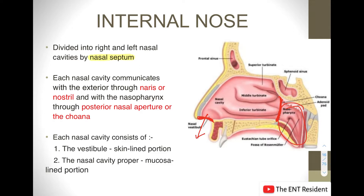Each nasal cavity consists of two parts: the vestibule, which is the skin-lined portion — as you can see in this picture, this region here is the vestibule — and the nasal cavity proper, which is the rest of the nasal cavity. The nasal cavity proper is lined by mucosa.